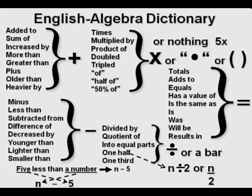This is a slide from my video 'Translating English to Algebra' — my one-page dictionary for translating English into Algebra. Let's pay attention to this graphic at the bottom of the slide. 'Less than' is a switch phrase, meaning that in translating this expression into Algebra, the order is switched.